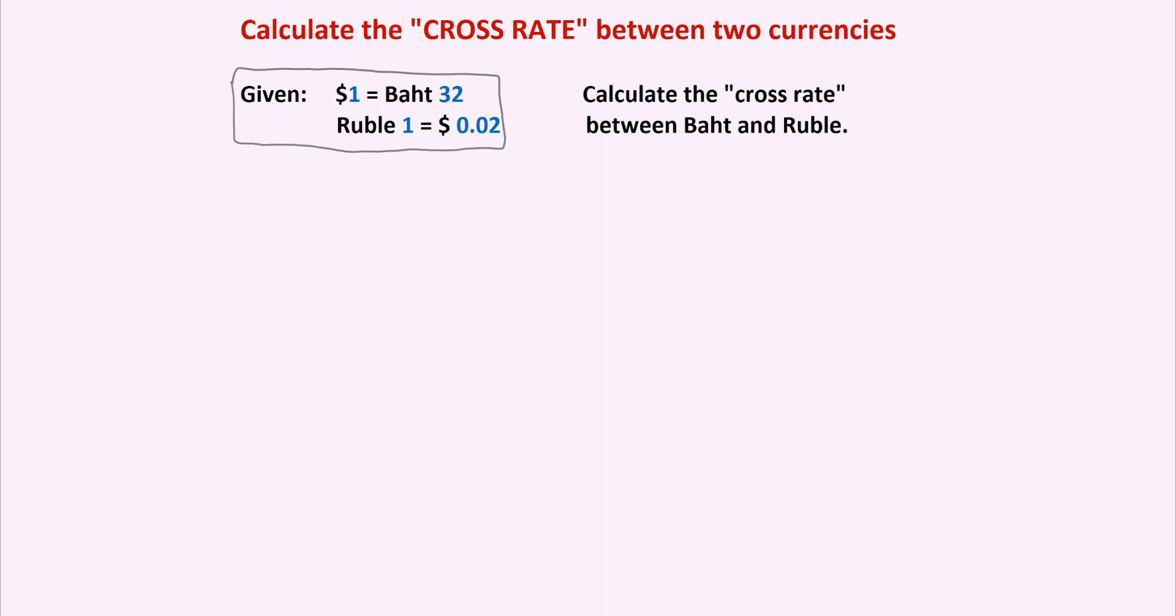I would recommend to start with the following. In my other example, example number one on calculating the cross rate, which you can also watch, which is actually a little bit easier than this one, we have both exchange rates between the dollar and the foreign currencies expressed in terms of one dollar equals the amount of that foreign country's currency. So why don't we take the one for the Russian ruble and rewrite it that way?